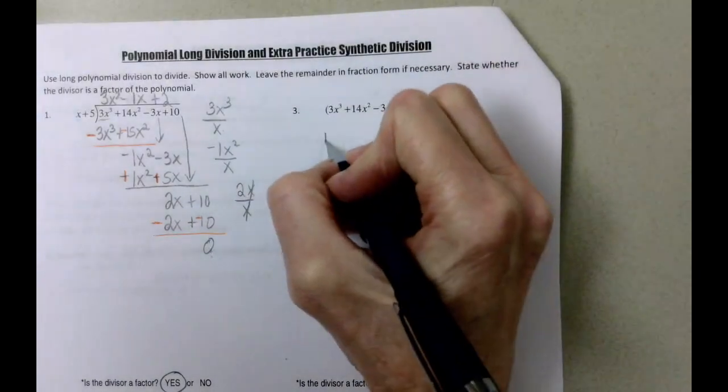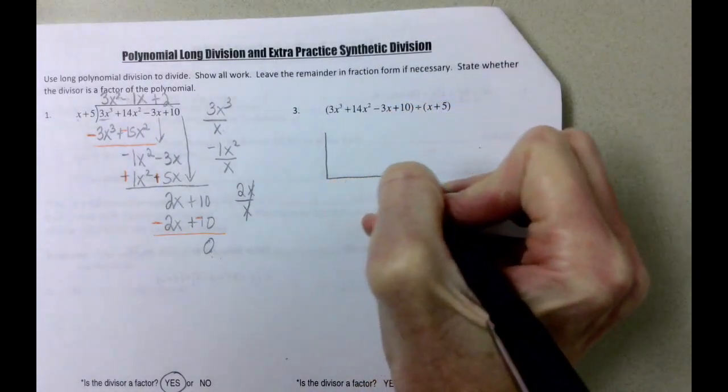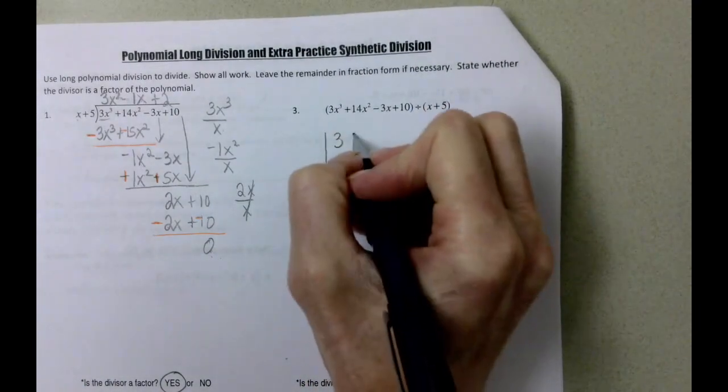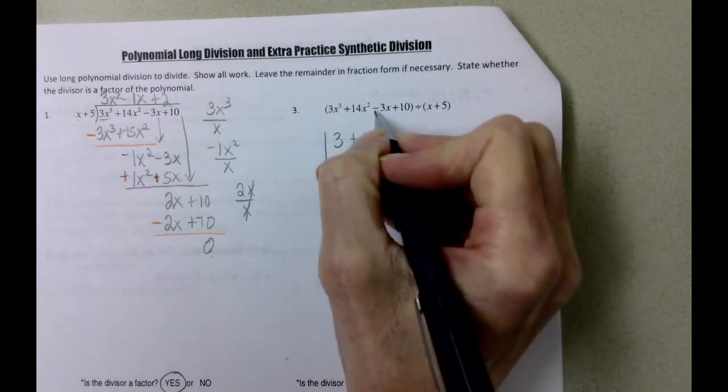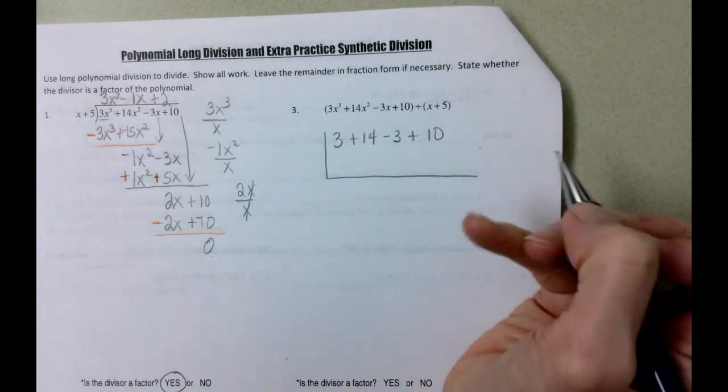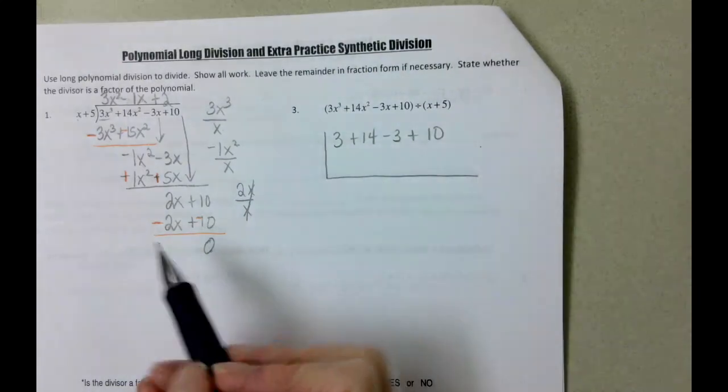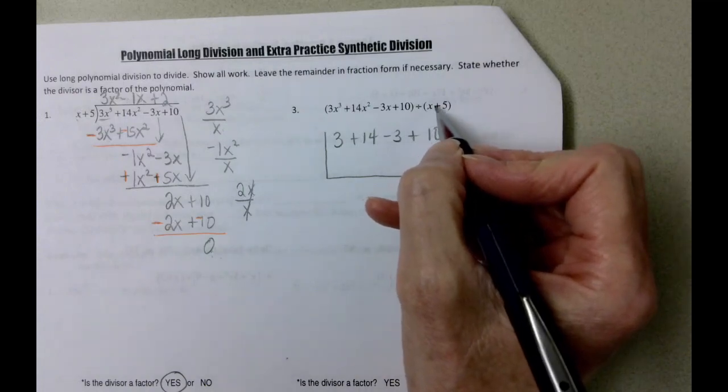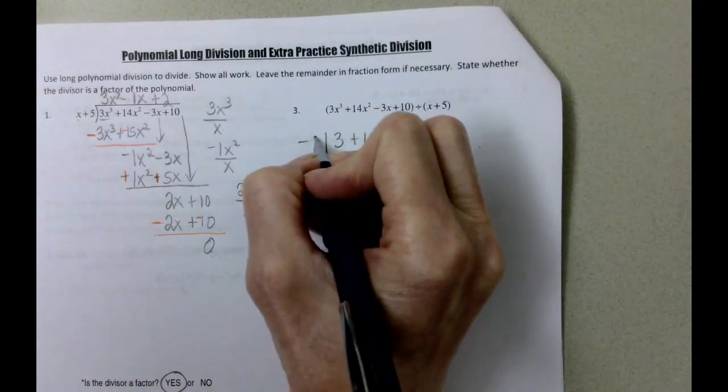So if we take a look at this, we're going to make our upside down division bar. 3 plus 14 minus 3 plus 10. And to avoid the changing both sides over here, we're going to change it now. Since it's x plus 5, this becomes negative 5.